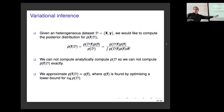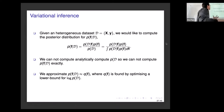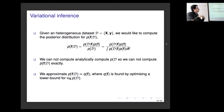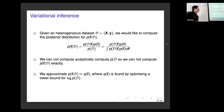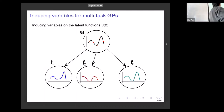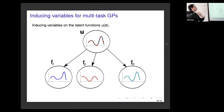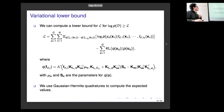Bayesian inference here is not as straightforward as in the regression case. We have to use more sophisticated methods — this one is called variational inference. Basically, we find an approximate posterior to the real posterior by minimizing the evidence lower bound. We also combine this with inducing variables, which allows us to handle large-scale data sets. The details are in the paper.